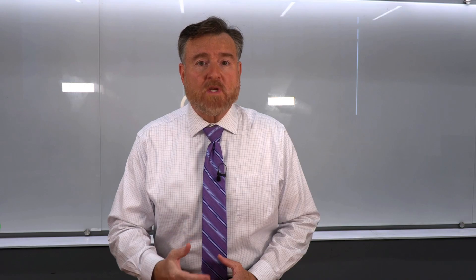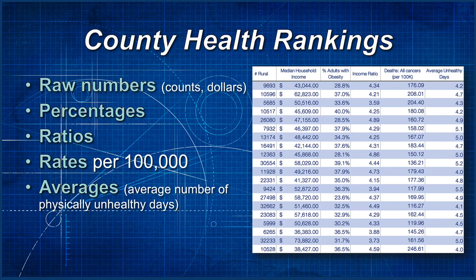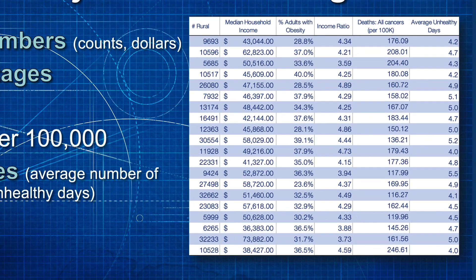I want to show you some real-world data. This dataset is about county health rankings. It's real-world in that it is drawn from actual counties in Missouri. However, these counties have been de-identified so that you do not know which county is which. The name of the county isn't really important — what is important are the variables.